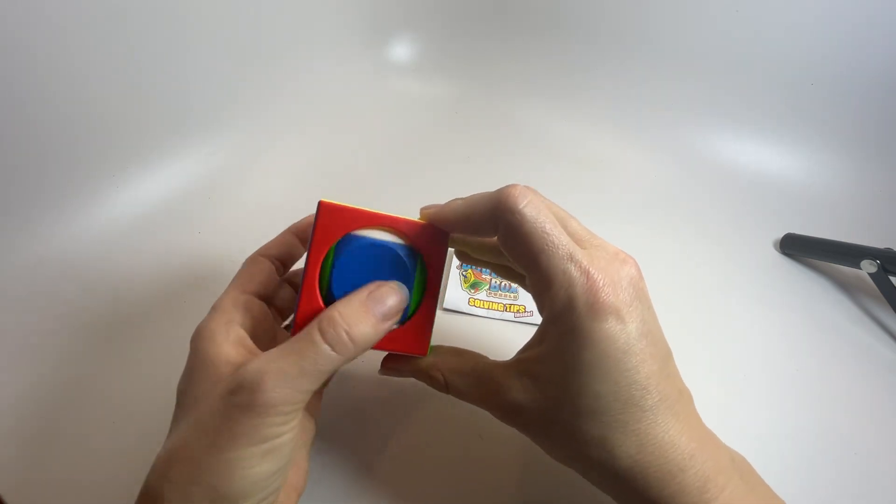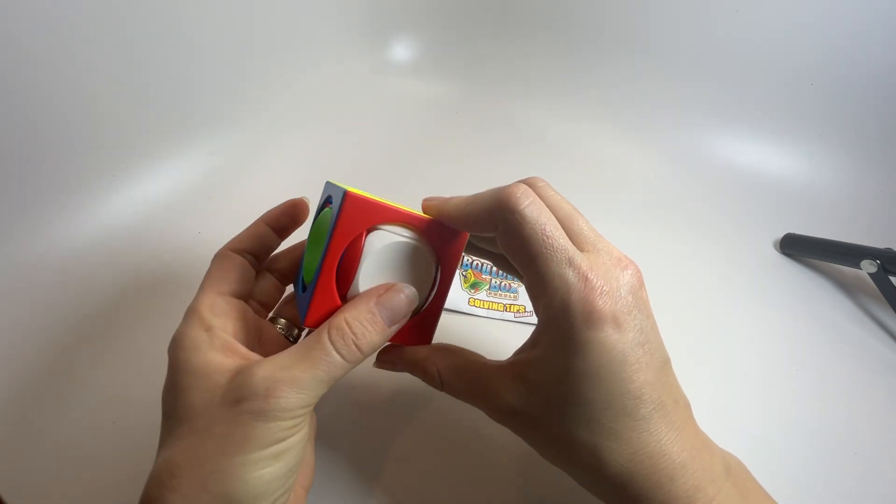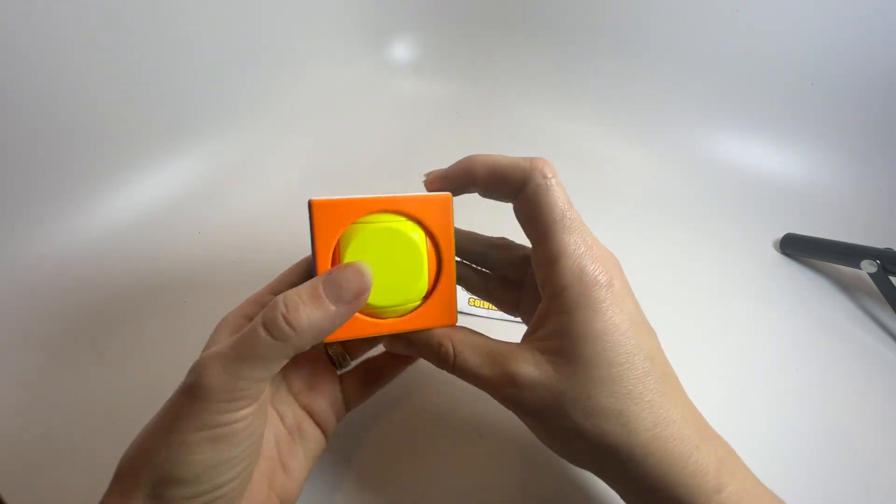So after you mix it up, you're supposed to somehow be able to get it back together where all the sides are the same color.